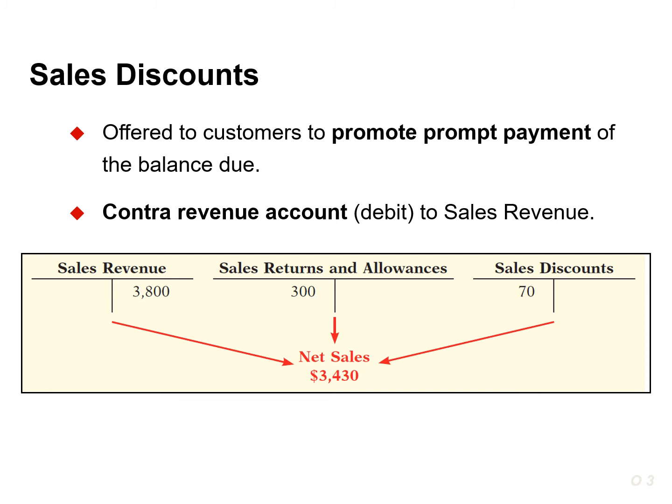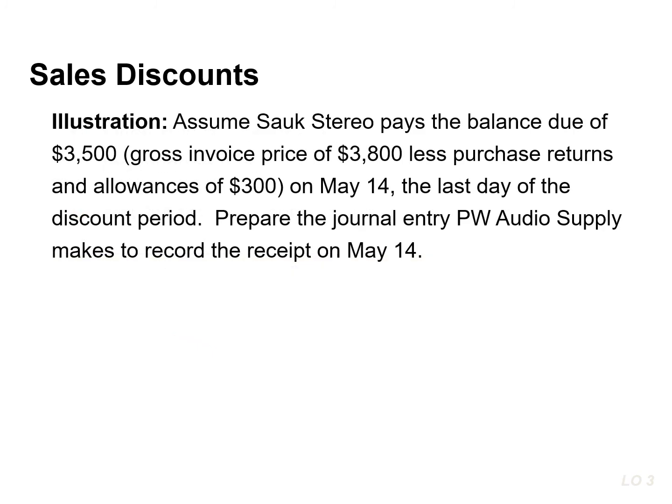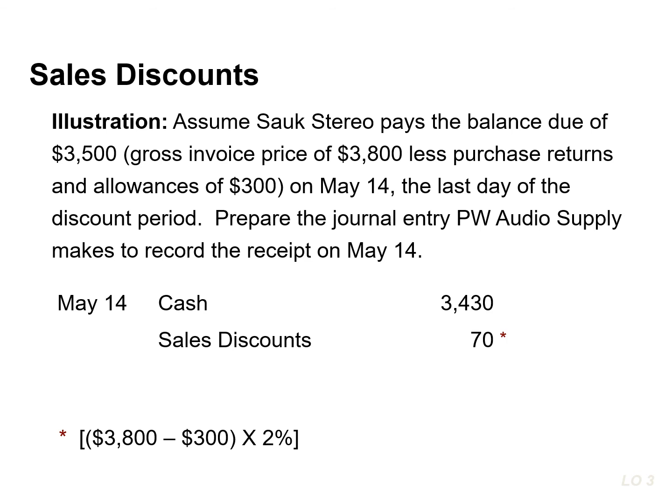Sellers use this account instead of debiting sales revenue to track the amount of cash discounts taken by customers. The entry by PW Audio to record the cash receipt on May 14th, which is within the discount period, is to debit cash for $3,430. We're also going to debit sales discounts, calculated by taking the balance due of $3,500 and multiplying that by the 2% discount. The credit to accounts receivable is for $3,500, which represents the amount that is due. If the customer does not take the discount, PW Audio simply debits cash for $3,500 and credits accounts receivable for the same amount at the date of collection.